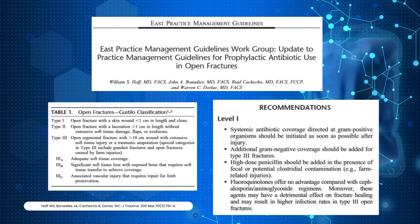Per the 2011 EAST Open Fracture Prophylaxis Guidelines, target pathogens are listed in their Level 1 recommendations. Systemic prophylactic antibiotics should be given as soon as possible, targeted towards gram-positive organisms. Common skin flora includes Streptococcus and Staphylococcus species. The EAST guidelines recommend additional gram-negative coverage for Type 3 fractures. High-dose penicillin can be considered for injuries with farm exposure and concern for Clostridium pathogens. Fluoroquinolones should be reserved for limited cases as they have a negative impact on wound healing.